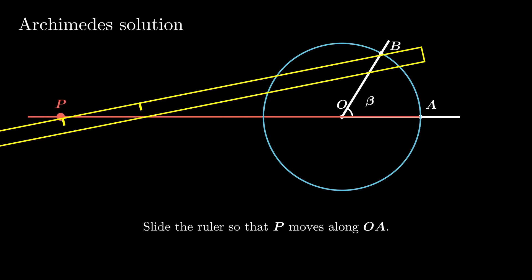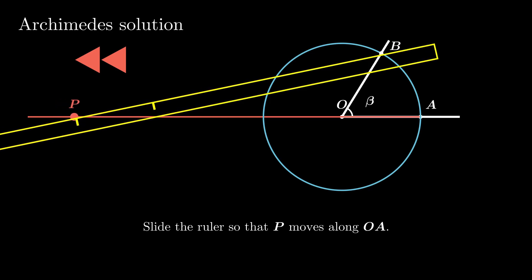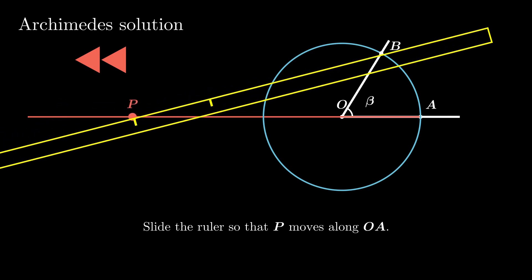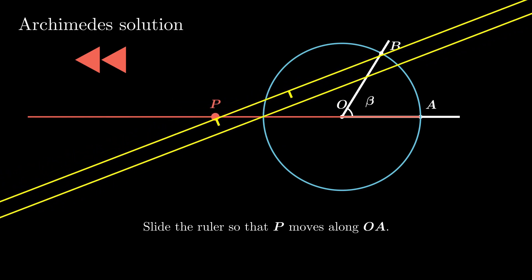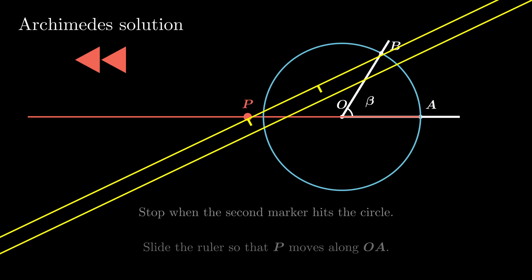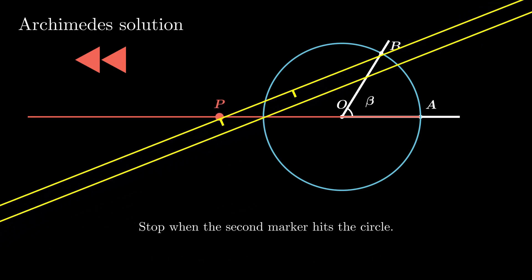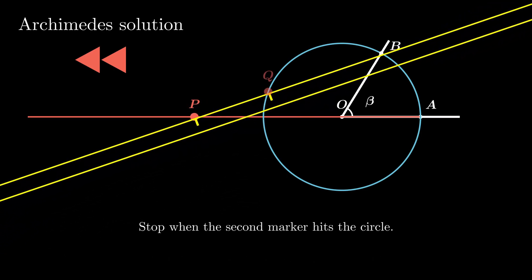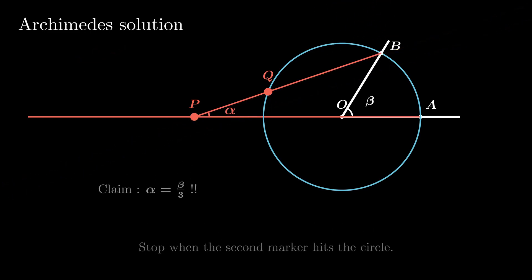So here is an animation of how to slide the ruler. The point P always lies on OA and the ruler always passes through the point B. And we stop when the second marker hits the circle.